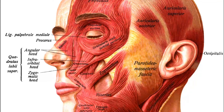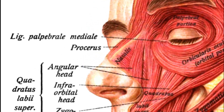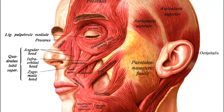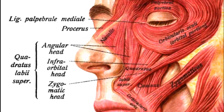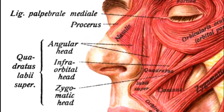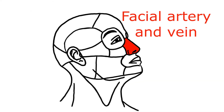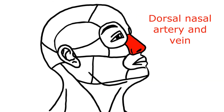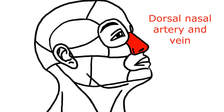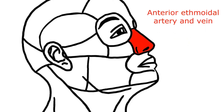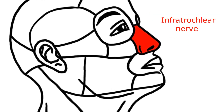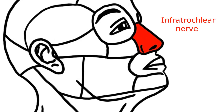To recap the nasal region: the nasalis muscle, the procerus, and the levator labii superioris alaeque nasi. Then you've got the facial artery and vein, the dorsal nasal artery and vein, the anterior ethmoidal artery and vein, and the infratrochlear nerve.